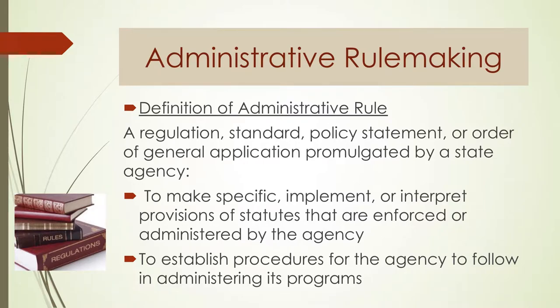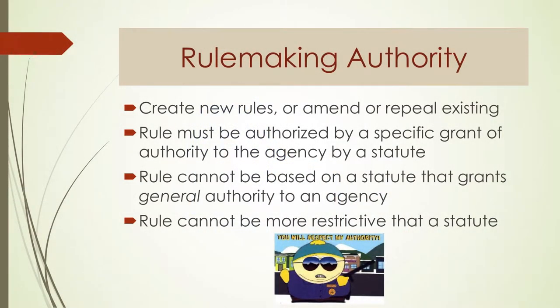An administrative rule is a regulation, standard, policy statement, or order of general application promulgated by a state agency — basically the thing that fleshes out what the statute is trying to accomplish. It establishes procedures for the agency to follow in administering programs. Agencies have rulemaking authority to create new rules, amend or repeal existing rules, but they have to be authorized by a specific grant of authority to the agency in a statute.